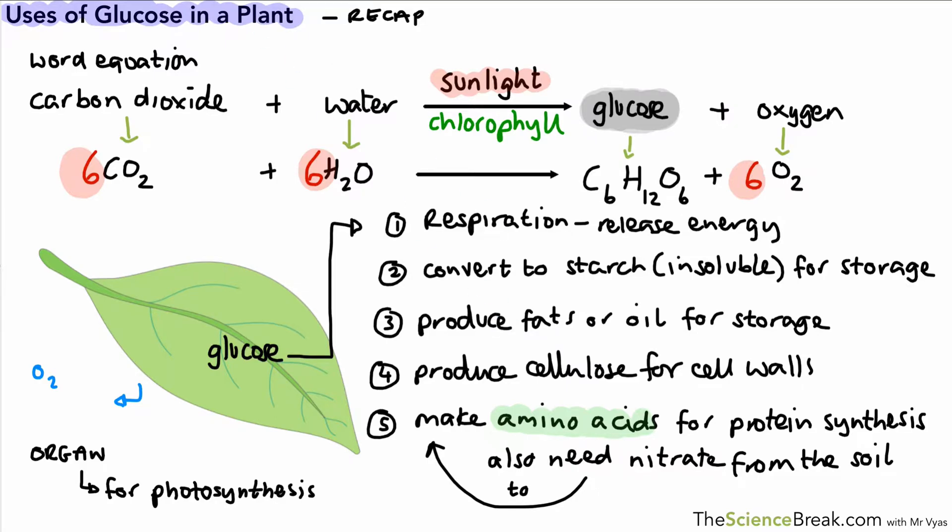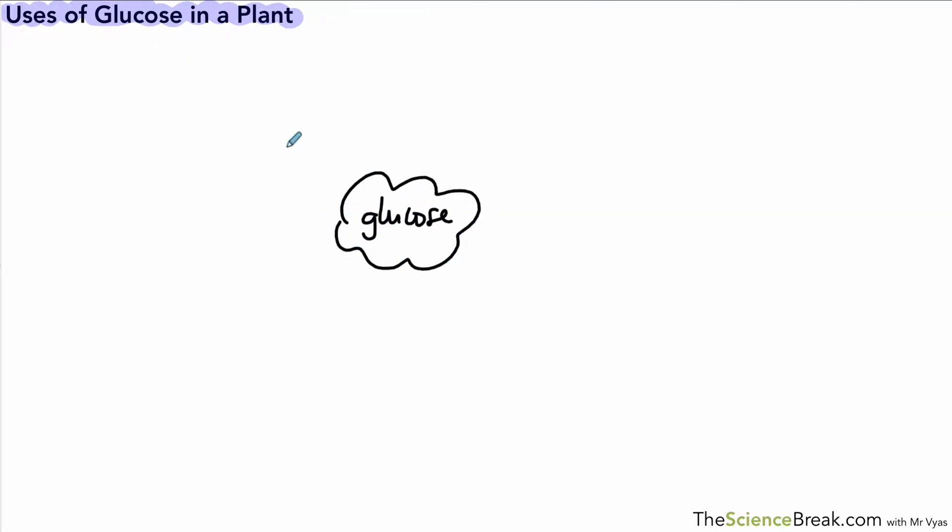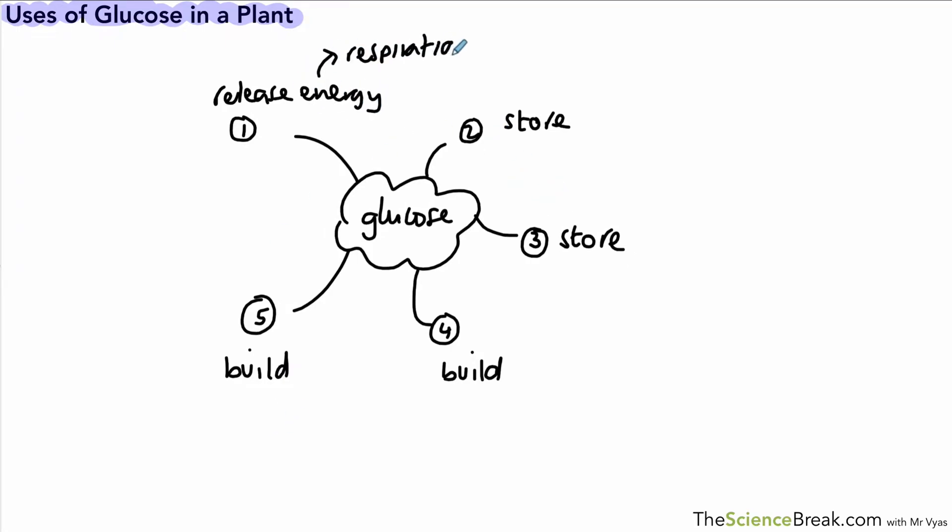Okay, so those are the uses. Now this is memory work. Remember there's five different uses, and it might just be useful to go over it in a slightly different way to make it memorable. So here we've got glucose in the middle and we're going to talk about the uses. Remember there were five uses to remember: one, two, three, four, five. First one, keyword: release. Then store, store, build, build.